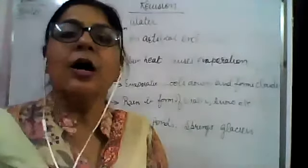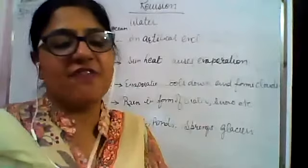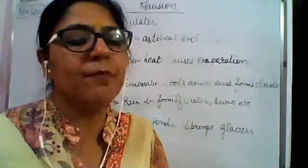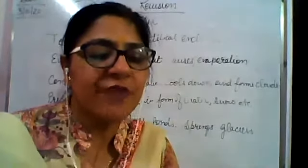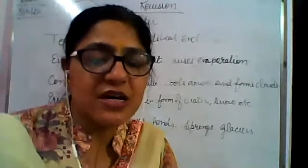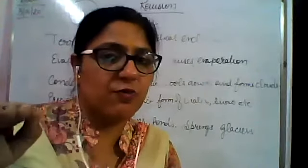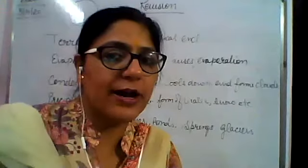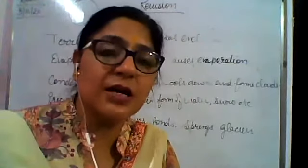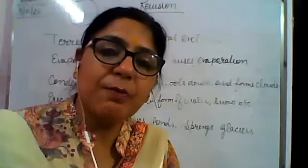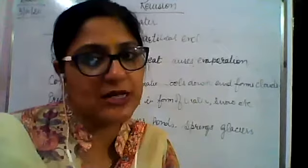What are waves? The rhythmic rise and fall of the ocean surface caused by external factors — mainly wind — is called waves. Wind and other external factors affect the surface of ocean water in a rhythmic up-and-down motion. But when storms occur, the waves can be very high.